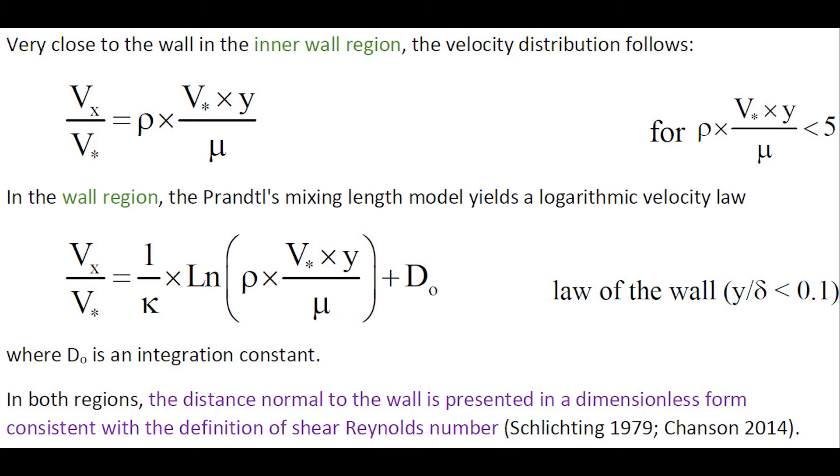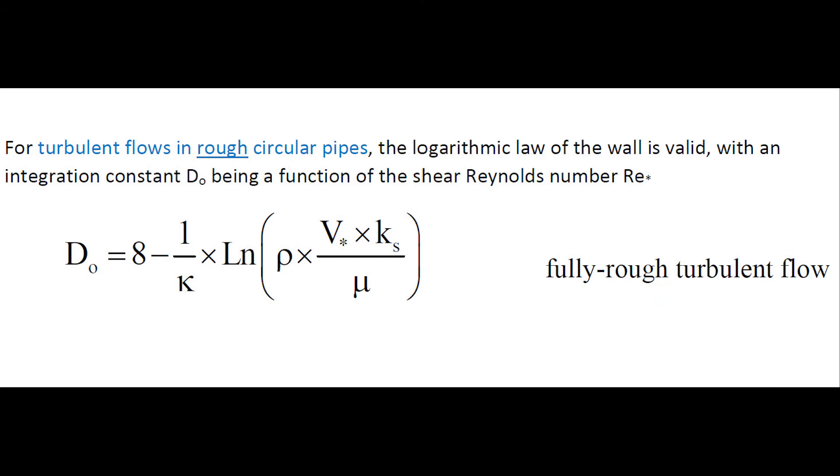In the inner wall region and the wall region, the distance normal to the wall and the velocity distribution is presented in a dimensionless form consistent with the definition of the shear Reynolds number.